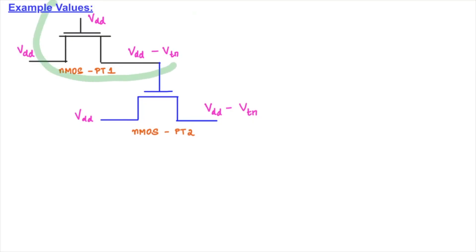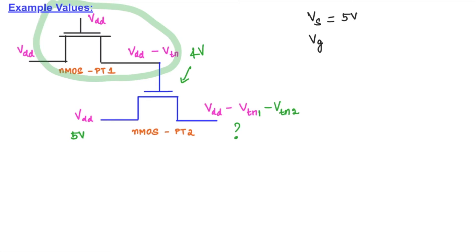The first pass transistor output is 4 volts. Now this 4 volt passes to the second pass transistor. We keep VDD = 5 volt for the gate and check: is the output going to be VDD minus Vtn1, or VDD minus Vtn1 minus Vtn2? With VS = 5 volts and VG = 4 volts: VGS = VG minus VS = 4 minus 5 = minus 1 volt. Since minus 1 is less than Vt = 1 volt, the second N-MOS pass transistor is also in an off condition.